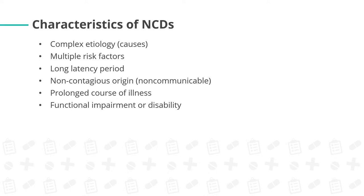What are the characteristics of NCDs? First, it has a complex etiology or causes — we need to consider multiple risk factors for each NCD. It has a long latency period, meaning a long waiting time for the disease to emerge. This is common in elderly or older age people. It is non-contagious in origin, meaning it doesn't spread in a certain area or location. It has a prolonged course of illness — for example, when a person has diabetes or cardiovascular diseases, it is not completely cured and the disease stays throughout his or her lifetime. And lastly, it has functional impairment or disability.